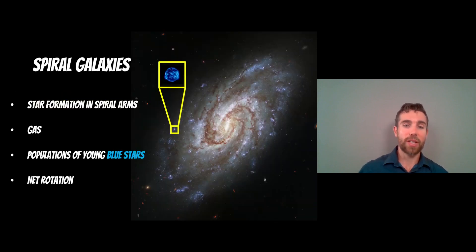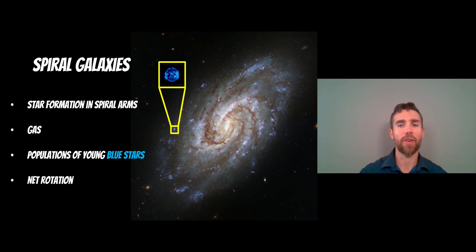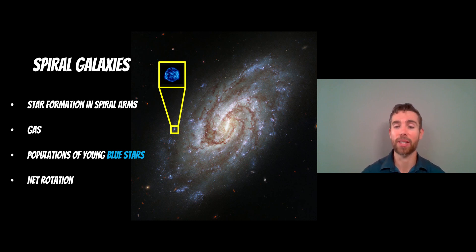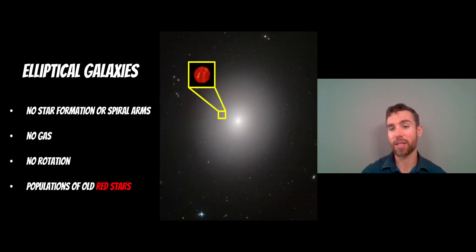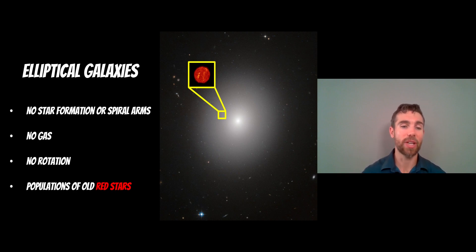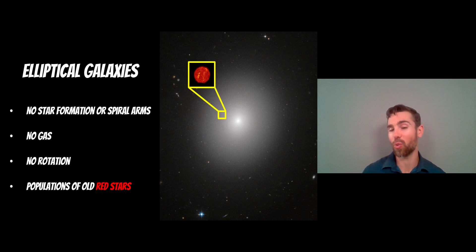Spiral galaxies have star formation mostly in the spiral arms, a high gas content that gets depleted as they age, populations of young blue stars, and a net rotation — the disc part of the galaxy rotates in a disc-like structure. Elliptical galaxies are kind of the opposite: no star formation or spiral arms, they're featureless with no gas and therefore no star formation. There's no net rotation; they're more spherical shaped and have populations of old red stars.